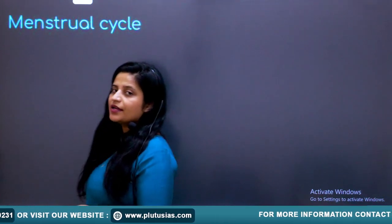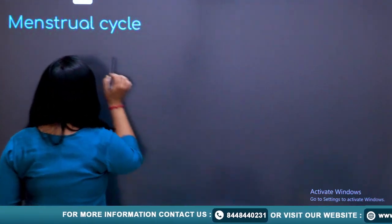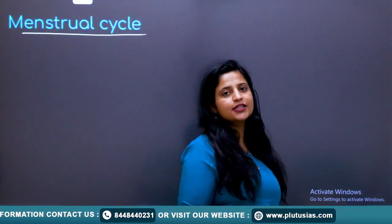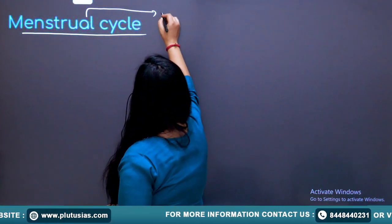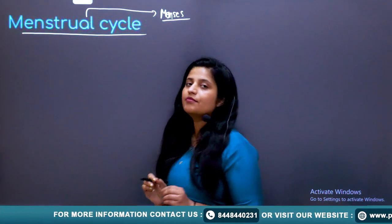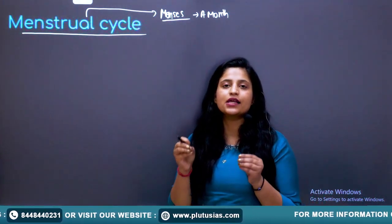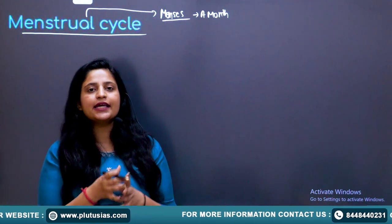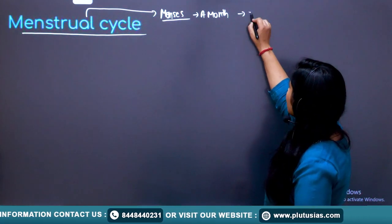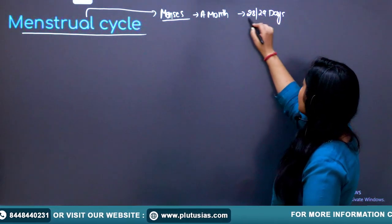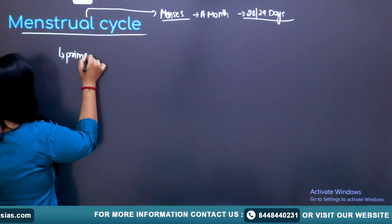The menstrual cycle comes from the word 'menses.' The meaning of menses is 'a month,' and this cycle completes in one month. The menstrual cycle is 28 to 29 days long and is a characteristic feature of primates — humans, monkeys, apes, etc.